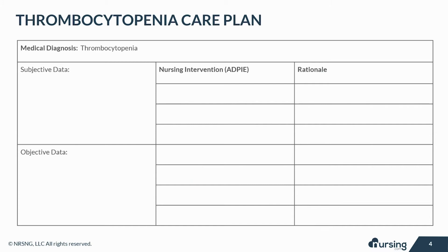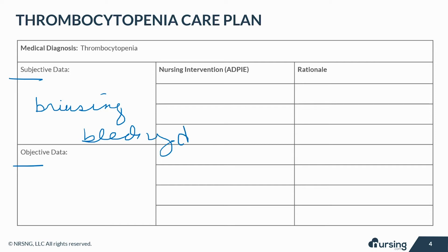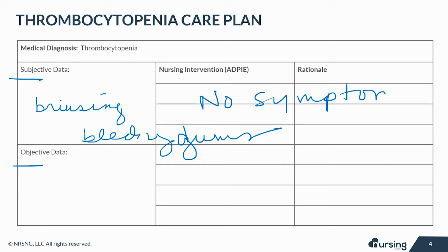Let's take a look at some of the subjective and objective data that your patient with thrombocytopenia may present with. Subjective data are things that are based on your patient's opinions or feelings. This might include bruising easily or bleeding gums with brushing, although patients might even be asymptomatic or have no symptoms at all.